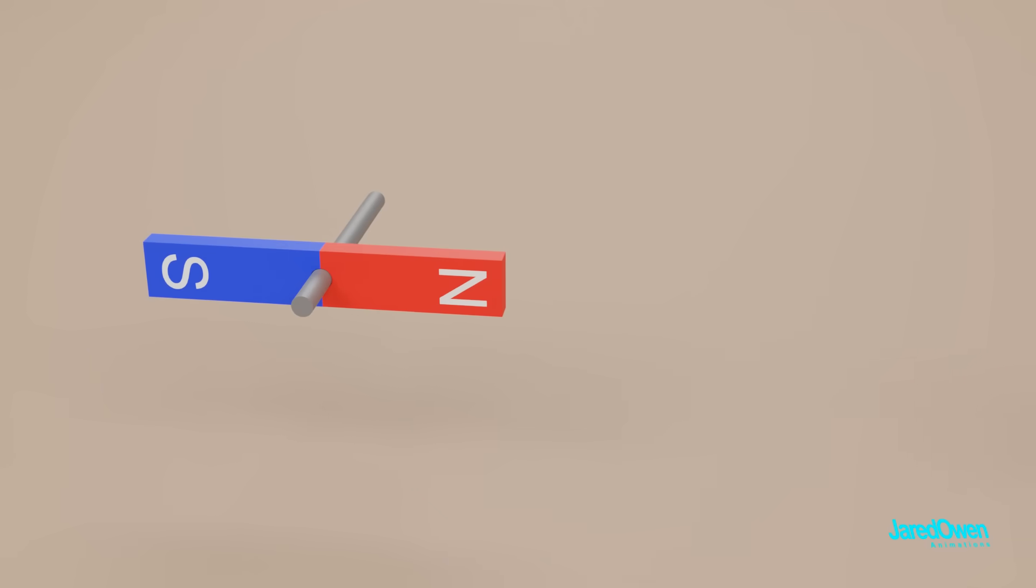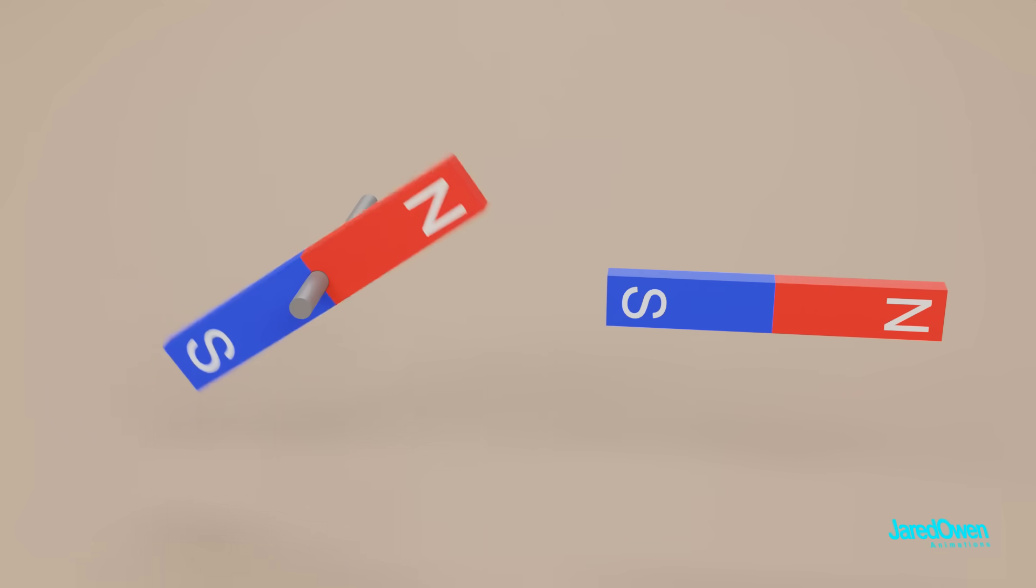If we keep switching out these side magnets, then our spinning magnet will just keep spinning. This concept of the spinning magnet is really important. We'll come back to it in a moment.